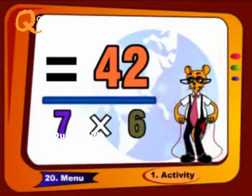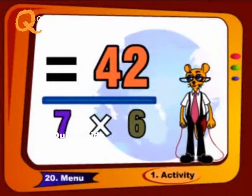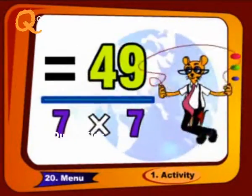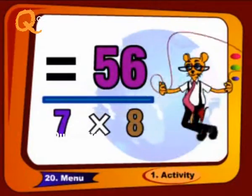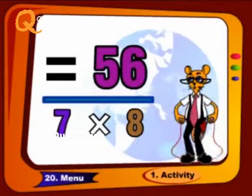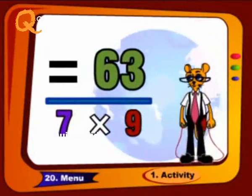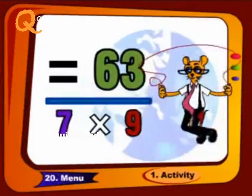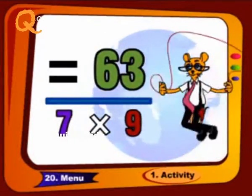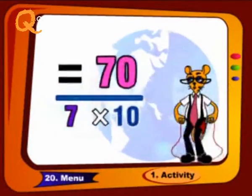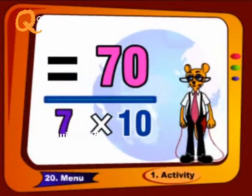7 6 are 42, 7 7's are 49, 7 8's are 56, 7 9's are 63, 7 10's are 70.